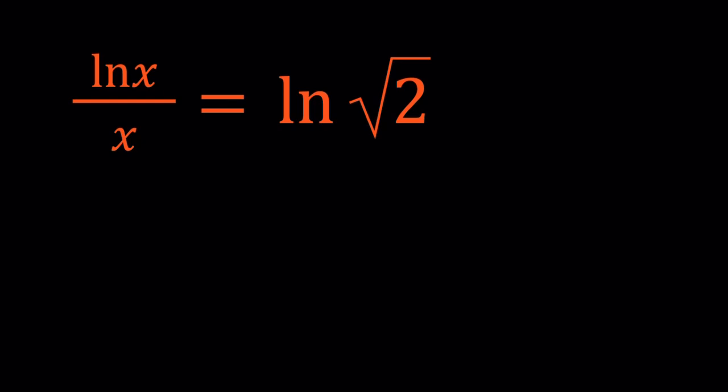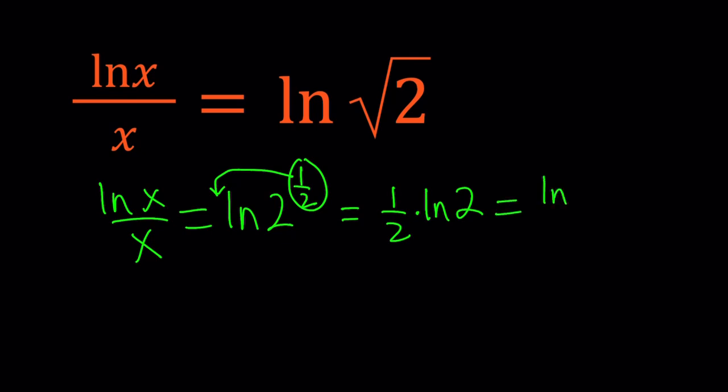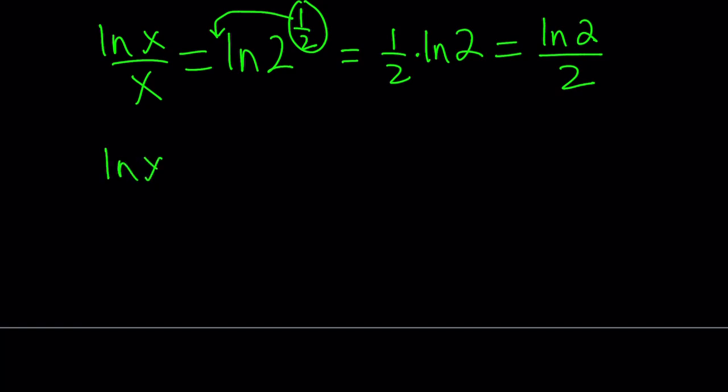So first of all, let's go ahead and write ln square root of 2 as ln 2 to the power 1 half. Now since this power can be moved to the front, let's go ahead and do it. 1 half times ln 2 by using properties of logarithms. And then 1 half times something means just half of that thing, so we can write this as ln 2 over 2. So this is significant because this gives us a really nice equation: ln x over x equals ln 2 over 2.